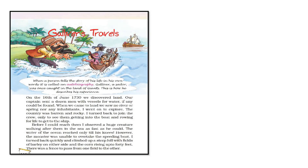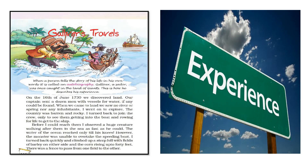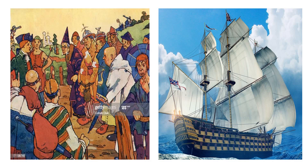Gulliver was a sailor who was caught in the land of chance. So, in this story he describes his experience about his journey. He describes that on 16th June 1730, Gulliver and his team discovered a land. His captain sent a dozen men with a big ship to search water if it could be found there. But when they reached there, they saw that there was not only no river, but also no spring and no human being.